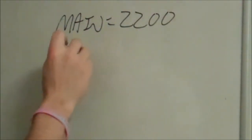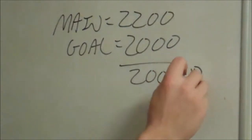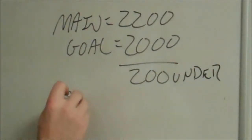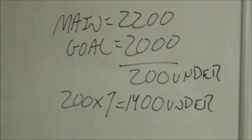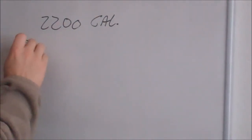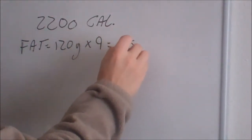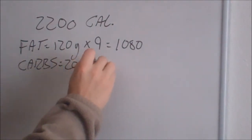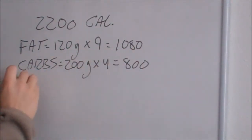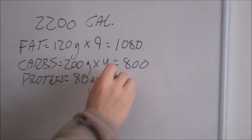Alright, so we know that your maintenance calories is 2,200. Let's say your goal is 2,000 calories — that means each day you will be 200 calories under your maintenance calories. So 200 calories for seven days a week is 1,400 calories under budget for that week, which translates into fat loss. For example, you ate 2,200 calories: 120 grams of fat — 120 times nine equals 1,080 calories. With the carbs, let's say you had 200 grams — 200 times four equals 800 calories. And protein, let's say 80 grams — 80 times four equals 320 calories. That's how you got to the 2,200 calories.